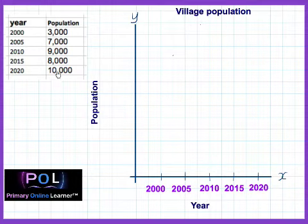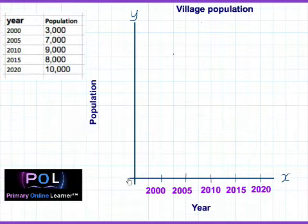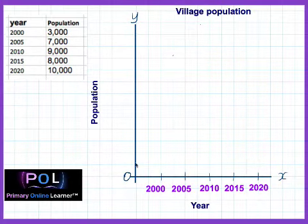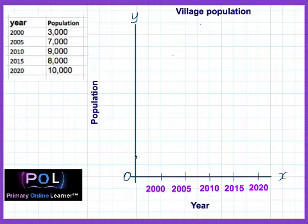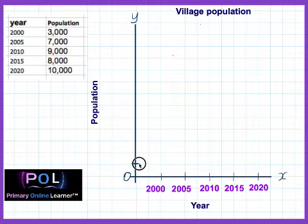Our population is going right up to 10,000, so here we should start from 0. We can make each line a thousand, but we cannot write 1000, 2000, and everything out fully — we are going to find a better way of doing it. So let's put the marks first.